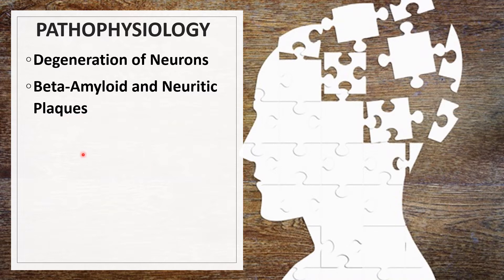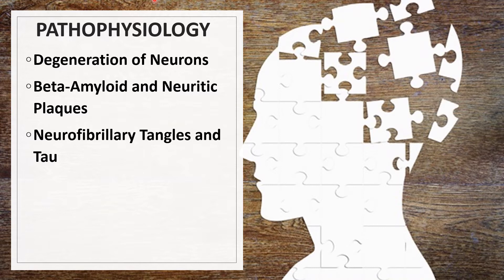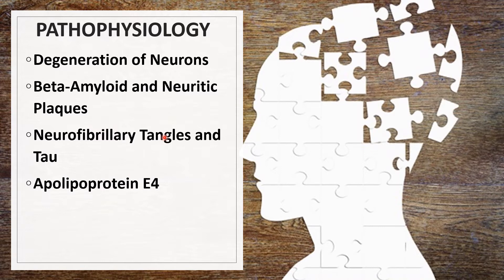Next would be neurofibrillary tangles and tau. Neurofibrillary tangles are a prominent feature of Alzheimer's disease. These tangles, which form inside the neuron, result when the orderly arrangement of microtubules becomes disrupted. Tau twists into paired helical filaments that form the tangles. Next would be apolipoprotein E4, long known for its role in cholesterol transport, which may also contribute to Alzheimer's disease.